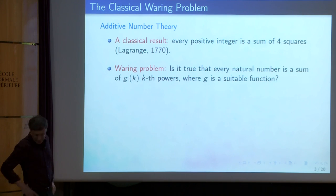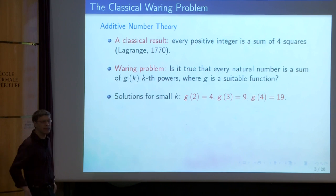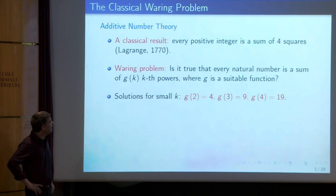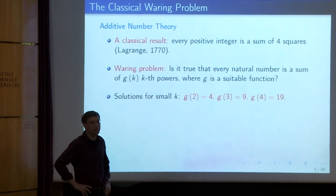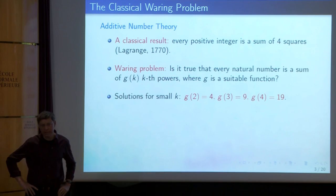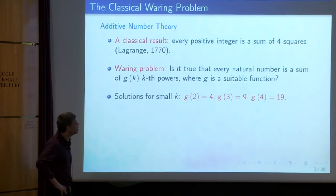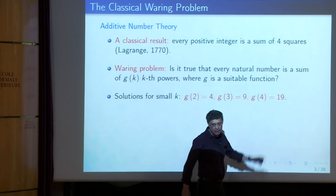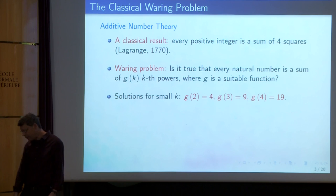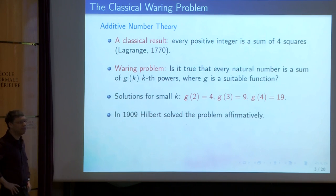What Waring did say was a declaration, not a question. He said that every natural number is a sum of nine cubes and 19 fourth powers, et cetera. So the et cetera became the Waring problem. And indeed his prediction was correct: g(3) is 9, g(4) is 19, exactly as he predicted. Hilbert was the first to solve the problem affirmatively. Then Hardy and Littlewood did work on this with the circle method.